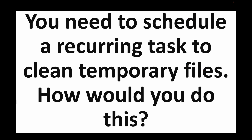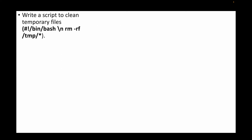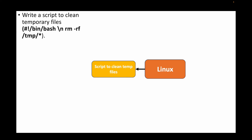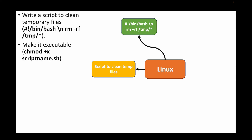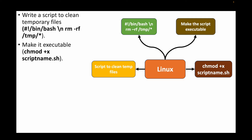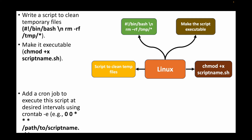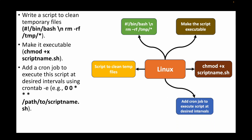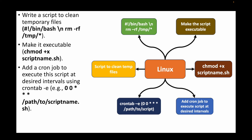The next question: you need to schedule a recurring task to clean temporary files — how would you do this? Write a script to remove temporary files, for example using rm -rf and the path to the temp directory. Make the script executable with chmod, then add a cron job using crontab -e to run it at your desired intervals.